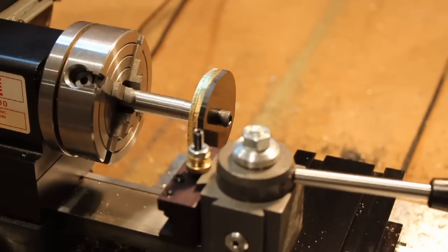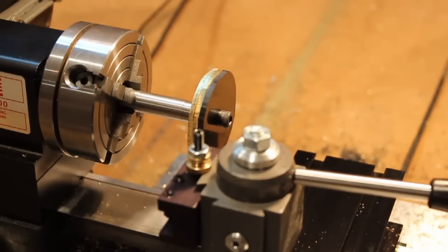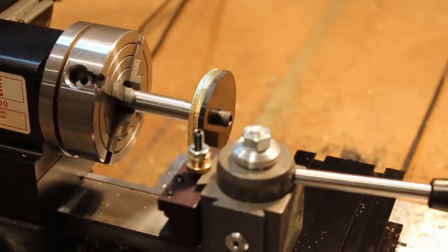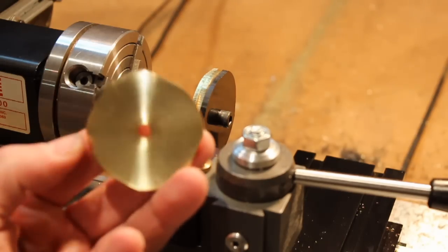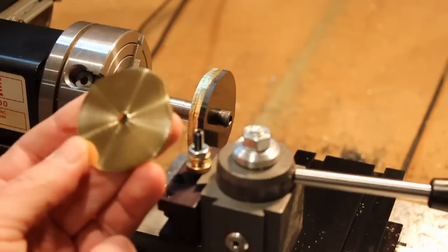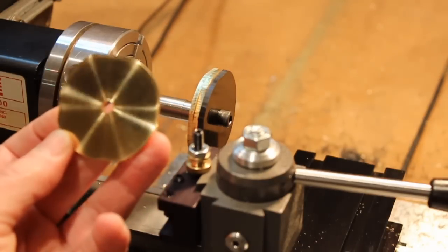Now for this operation, getting the backlash set up just right, and I'm talking about setting it up electronically in Mach 3 in my case, but whatever your control program is, because we're going to be turning blanks that begin as what I tend to call round rectangles, or almost round blanks.